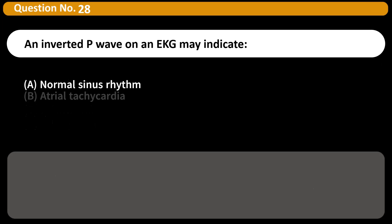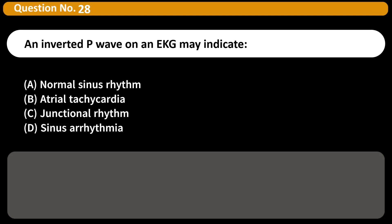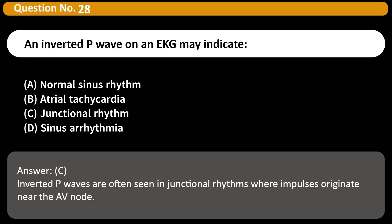An inverted P-wave on an EKG may indicate A. Normal sinus rhythm B. Atrial tachycardia C. Junctional rhythm D. Sinus arrhythmia Answer C. Inverted P-waves are often seen in junctional rhythms where impulses originate near the AV node.